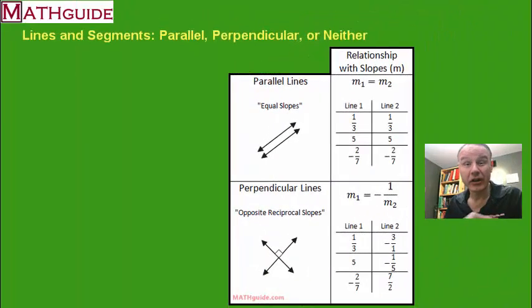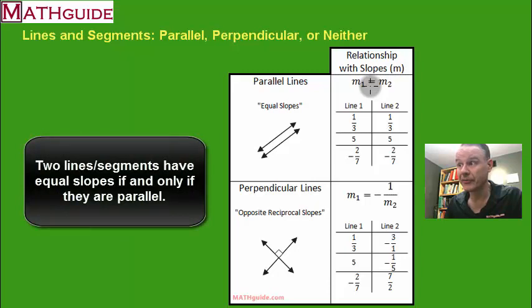To understand if lines or segments are parallel, perpendicular, or neither, let's look at this graphic. When you look at this graphic, you'll see that parallel lines are lines that don't cross, and the relationship between their slopes is real simple. They're equal. You could see that if one line has a slope of a third, then the other one has to be a third, and so on. So these examples are pretty easy.